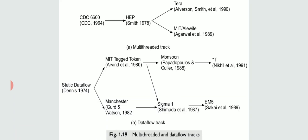The data flow track, also called instruction-level parallelism, involves running different instructions in parallel at a given time. The difference is: in multi-threaded we run different functions in parallel, whereas in the data flow track we run different instructions in parallel across different processes.